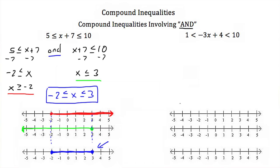Let's try the next one. Here we have 1 is less than negative 3x plus 4, which is less than 10. To solve this one, I'm going to break it up again. We'll have 1 is less than negative 3x plus 4, and negative 3x plus 4 has to be less than 10.